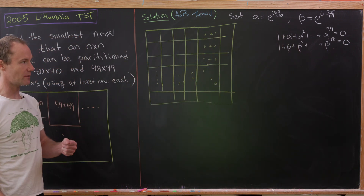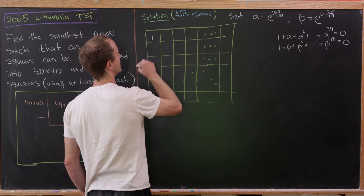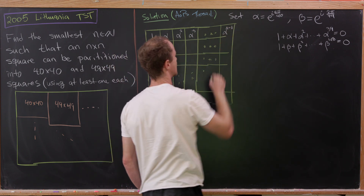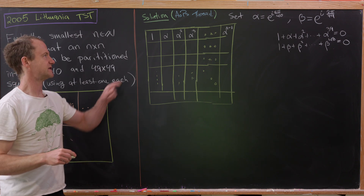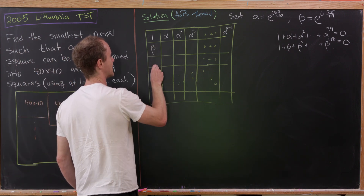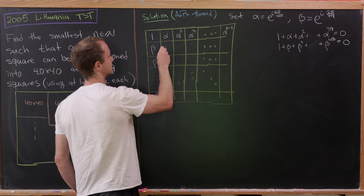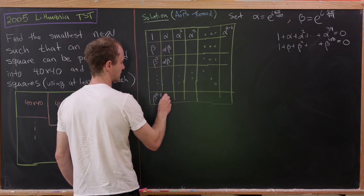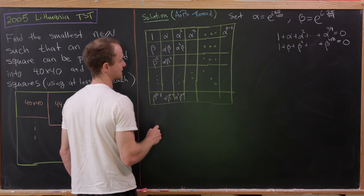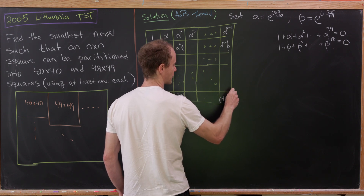Now we'll place complex numbers built out of alpha and beta into each cell of the square. The top row goes: 1, alpha, alpha squared, alpha cubed, all the way to alpha to the n minus one. The left column goes: 1, beta, beta squared, beta cubed, down to beta to the n minus one. We fill in the rest so that the entry in row j, column i is alpha to the i times beta to the j — so for example alpha·beta, alpha·beta squared, alpha squared·beta, and so on up to alpha to the n minus one times beta to the n minus one.